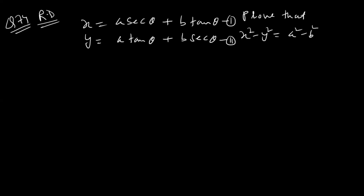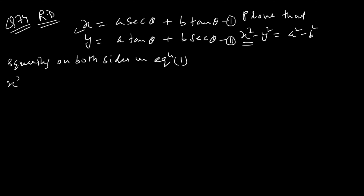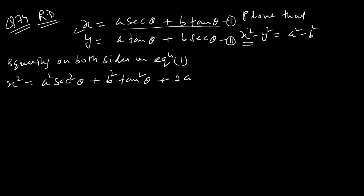इसको पहले equation बोलो, इसको दूसरी बोलो। यहाँ x² चाहिए, तो पहले equation का square कर लेते हैं — squaring on both sides in equation one. इसको खोल दो a plus b के whole square से। तो यह आएगा: a² sec²θ plus b² tan²θ plus 2ab·sec θ·tan θ.